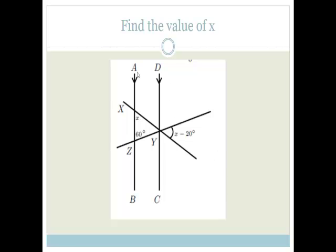Let's look at just the parallel lines here. We've got two parallel lines, A to B and C to D. Whenever we have parallel lines, we have things like your F shape, which gives you corresponding angles. We have a C shape, which is co-interior, and when we add them together, they add up to 180. And we have the Z shape, which means they're alternate, and alternate angles are equal. And obviously, we've also got vertically opposite angles are equal on straight lines.